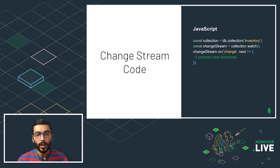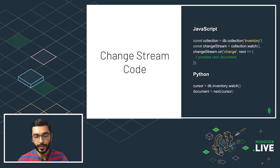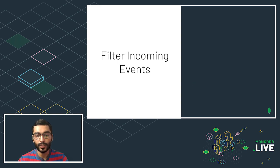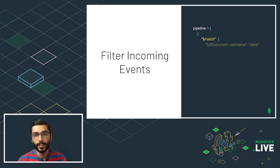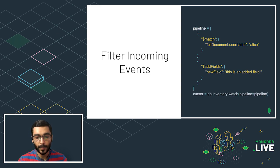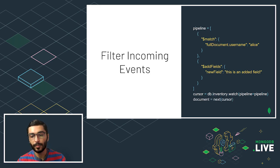Similarly in Python, we define a cursor to the collection and iterate over it as events happen. To listen to only certain types of events, we define a pipeline with aggregation stages such as a dollar-match stage or dollar-addFields, then pass that pipeline when we start watching the collection and iterate over the results — as simple as that.